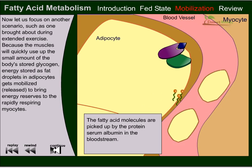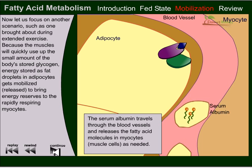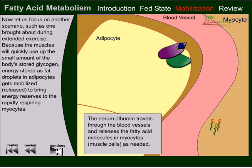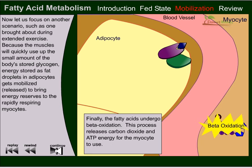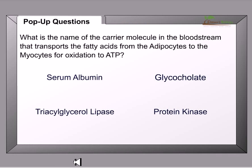Once activated, the triacylglycerol lipase breaks down triacylglycerols into their fatty acid and glycerol components. The fatty acid molecules are then picked up by the protein serum albumin in the bloodstream. Serum albumin is a very important carrier for these fatty acid molecules. The serum albumin travels through the blood vessel and releases the fatty acid molecules in myocytes — the muscle cells — as they are needed. Finally, the fatty acid undergoes beta-oxidation, releasing carbon dioxide and ATP energy for the myocyte to use via oxidative phosphorylation.